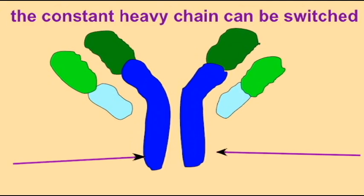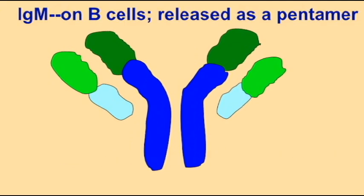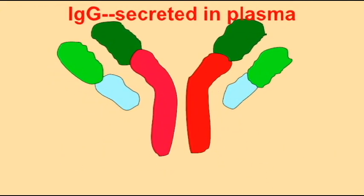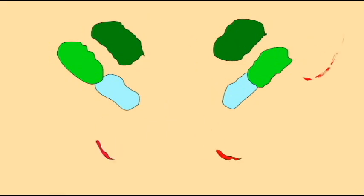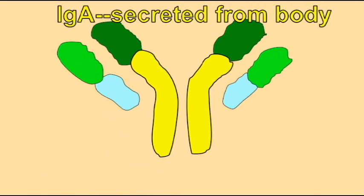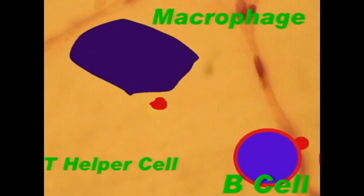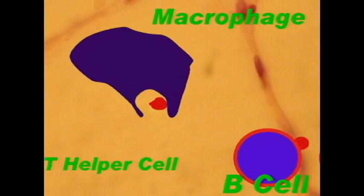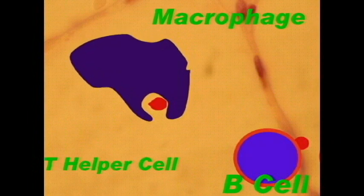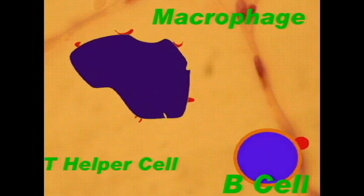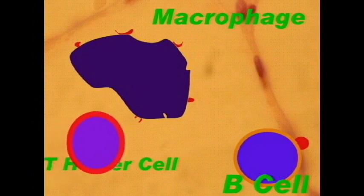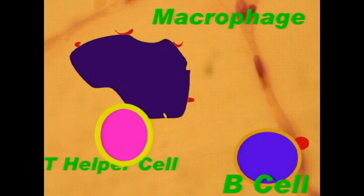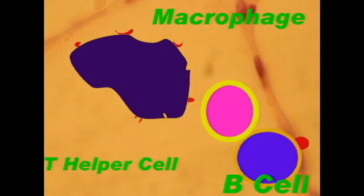Antibodies are proteins, and the diverse classes of antibodies allow for the immune system to recognize foreign substances and react to them. Proteins are also essential for the complex interactions between immune cells such as macrophages, B cells, and T helper cells.